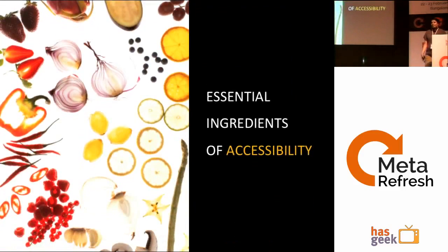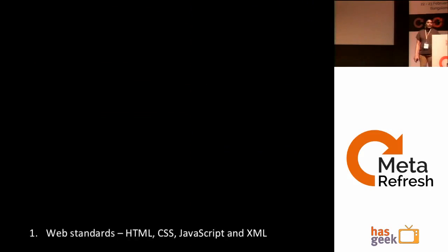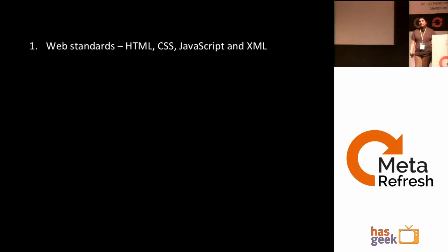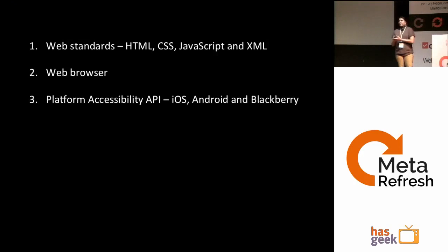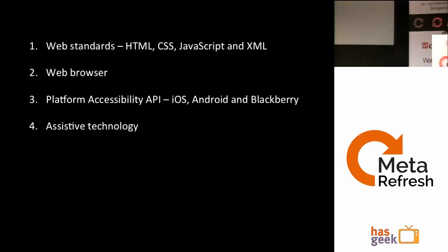The ingredients for mobile accessibility are: web standards — HTML, CSS, JavaScript, XML — used for mobile web applications; web browsers that work on mobile web; platform accessibility APIs, which are platform-specific APIs available for iOS, Android, Blackberry and so on; assistive technologies like screen readers; and platform accessibility features — all devices have their own built-in features, like iOS VoiceOver, which reads content aloud for people who can't see.